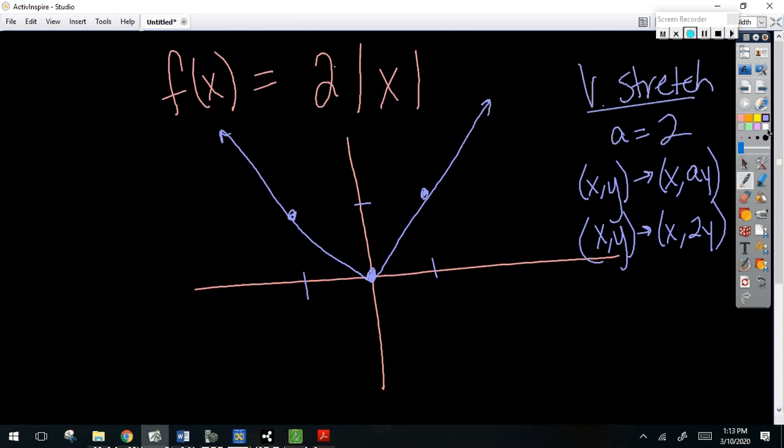All right, so 0, 0 stays 0, 0. Remember, it's not shifting any. It's just stretching or shrinking, right? All right, and if I've done this correctly, if it's a vertical shrink, my graph should shrink in, right? I mean, a vertical stretch. My graph should shrink in horizontal.